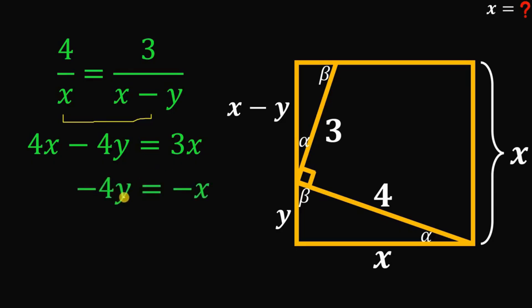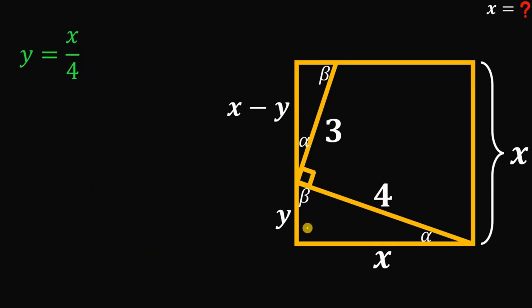Then combine like terms. We have negative 4y equals negative x. Divide both sides by negative four. So we have y equals x over 4. In short, we can rewrite y in terms of x. So y is just x over 4.